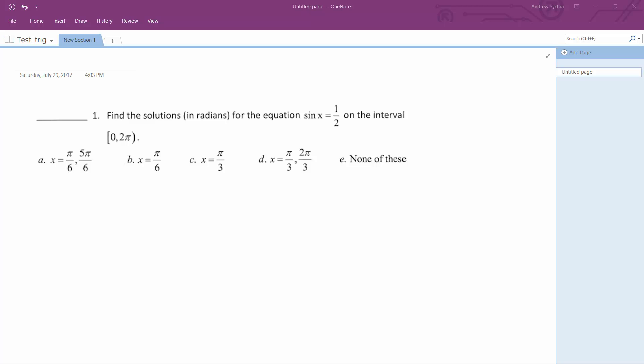All right, what we have here is sine of x equals 1 half, and we want to find from the interval 0 to 2 pi on a circle where sine of x does equal 1 half.